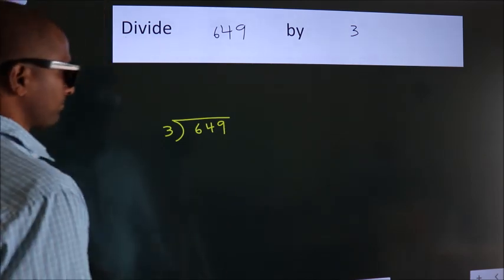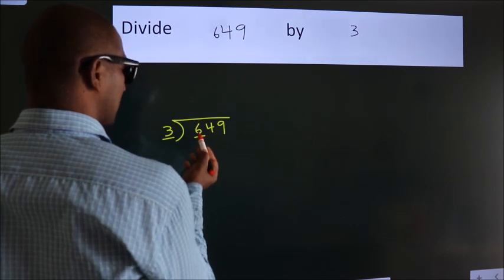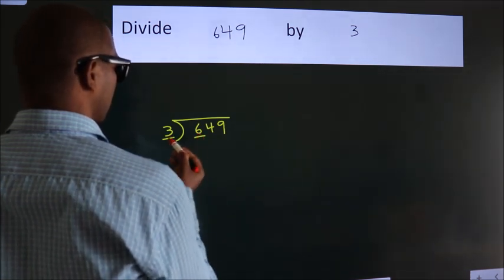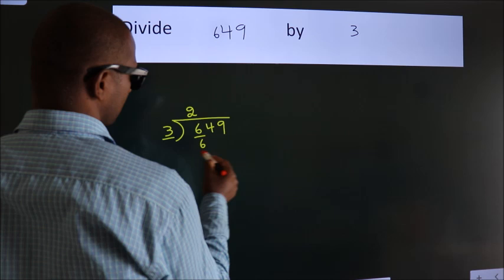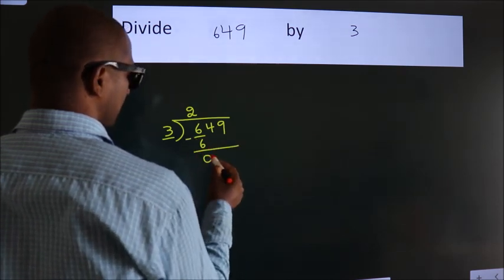Next. Here we have 6. Here 3. When do we get 6? In 3 table. 3 times 2 is 6. Now we should subtract. We get 0.